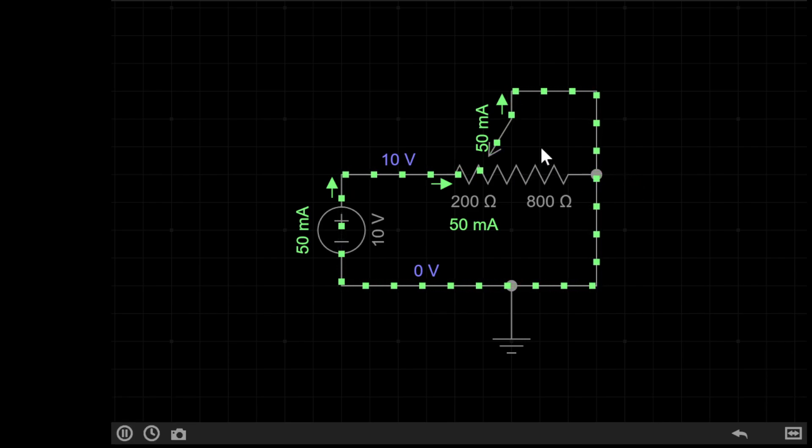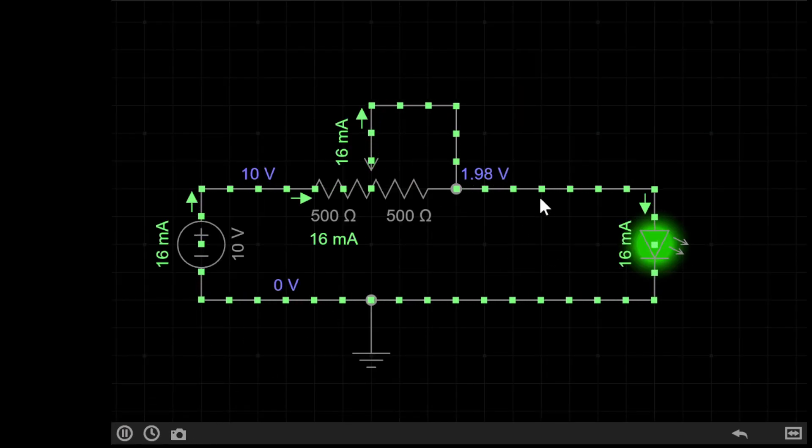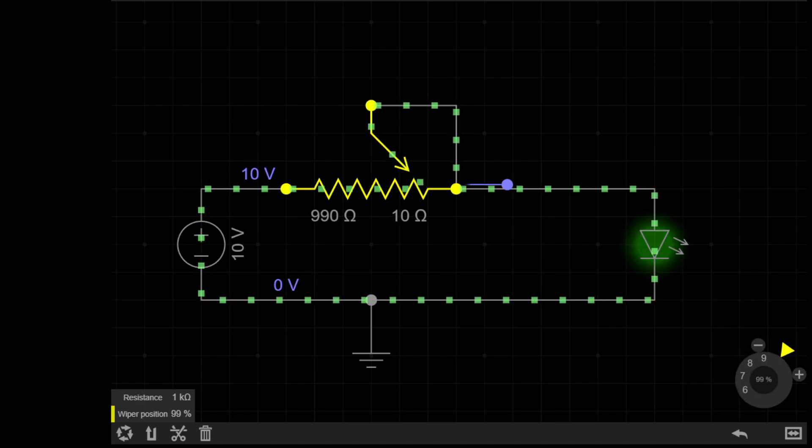So this is all well and good, but why don't we try and use the potentiometer to control say an LED. Here I've added an LED and the pot is at 50%, so if I simulate the circuit, you can see the LED is shining, but not that brightly. If I then decrease the value of the pot, you can see that as I increase the resistance, the current lowers and the LED gets less dim.